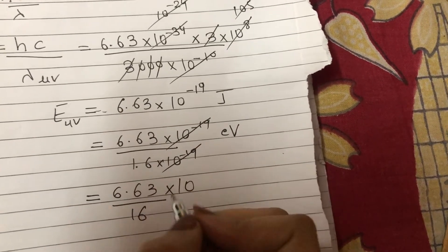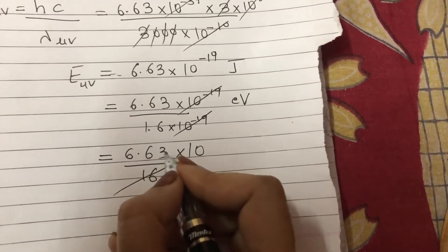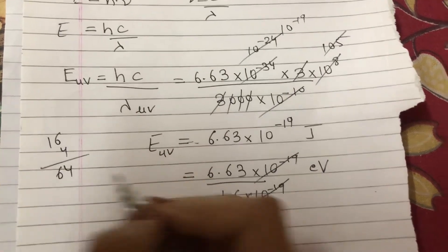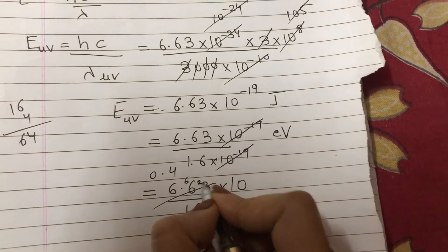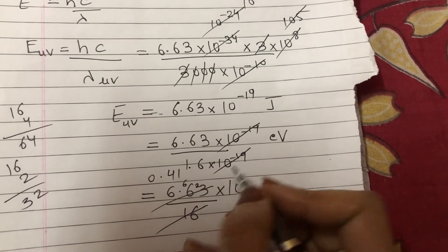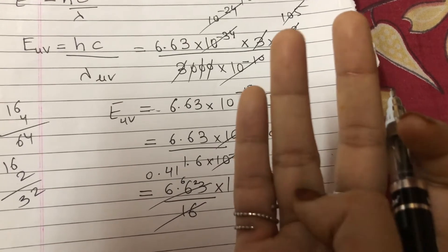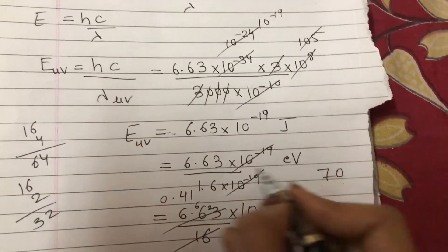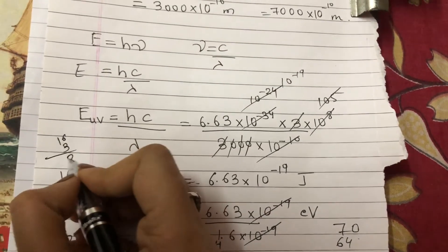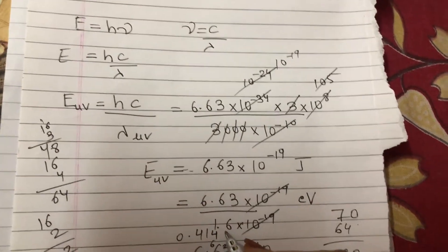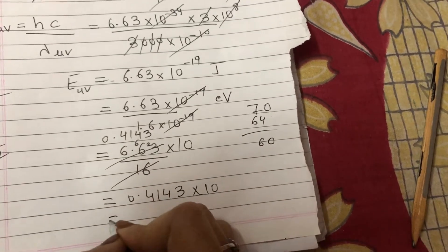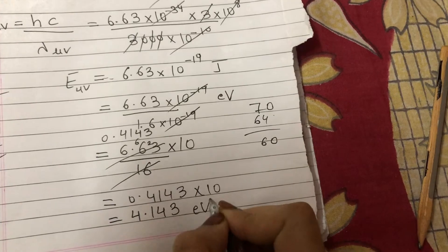Now we can go with 16's table for the division. Working through: 66 divided by 16 is 4, remainder 2. Then 23 divided by 16 is 1, remainder 7. Continuing the division with 70, then 60. After the point we have three digits, so we can stop. That is 0.414×10, which equals 4.14 electron volts approximately.